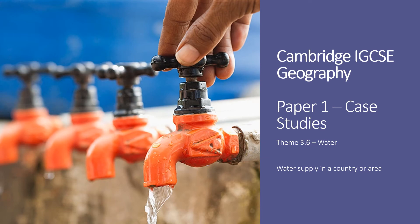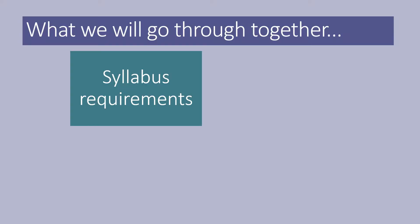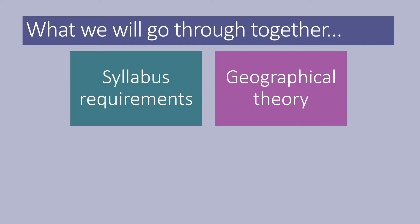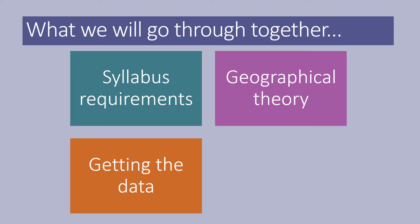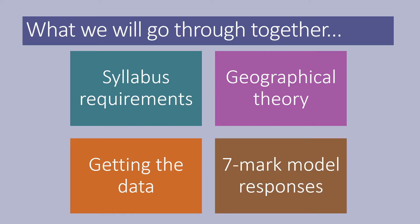In this short video, I'll be taking you through how to respond to the case study questions for 3.6 water for the Cambridge IGCSE Geography exam. These are the questions that appear in paper one. Over the course of this video, we'll be going through syllabus requirements, a little bit of background revision of the geographical theory, how to get the place-specific references and data to help you answer these questions, and a model response for the seven mark questions.